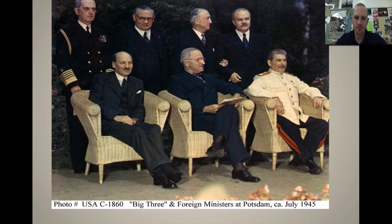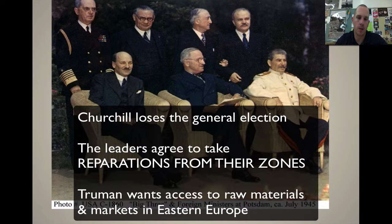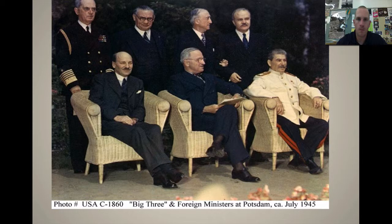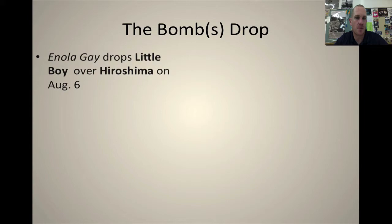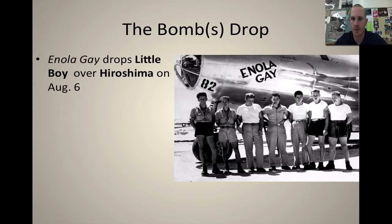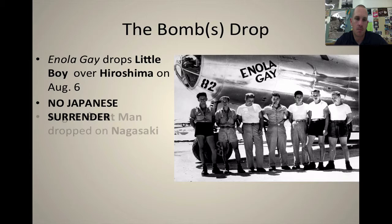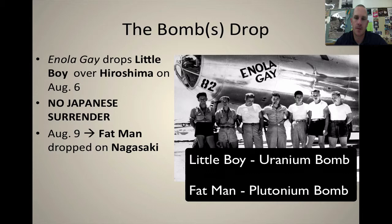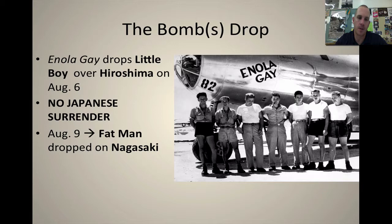You see the big three at Potsdam — notice it's not Churchill anymore. Stalin is the only leader who sees the beginning of the war through the end. Clement Attlee has taken over after Churchill's party lost the general election. Now the bomb itself: the Enola Gay drops Little Boy over Hiroshima on August 6, 1945. Surprisingly, there is no Japanese surrender. Three days later, August 9, Fat Man is dropped on Nagasaki. Some people speculate Fat Man was named after Churchill being a bit more round — but you can make that opinion for yourself.